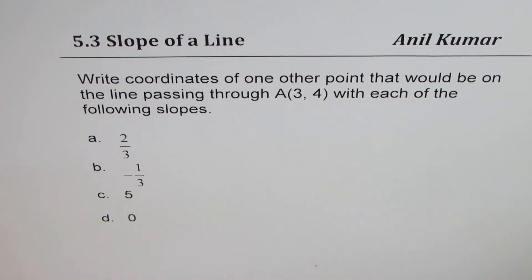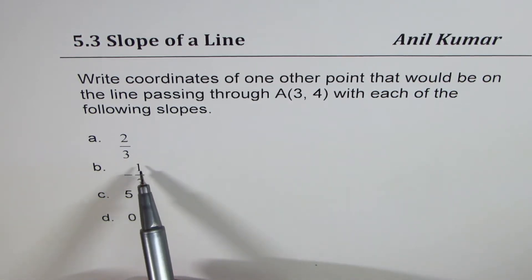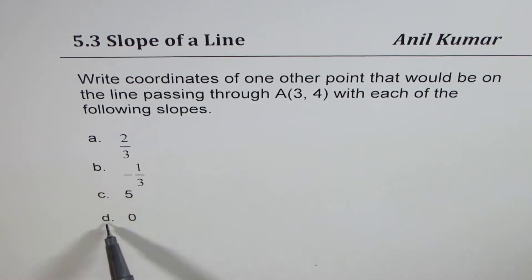I'm Anil Kumar sharing with you a question from my subscriber Rhea. The question is: write coordinates of one other point that would be on the line passing through A(3,4) with each of the following slopes. We have four different slopes: A is 2/3, B is -1/3, C is 5, and D is 0. You can always pause the video, answer the question, and then look into my suggestions.